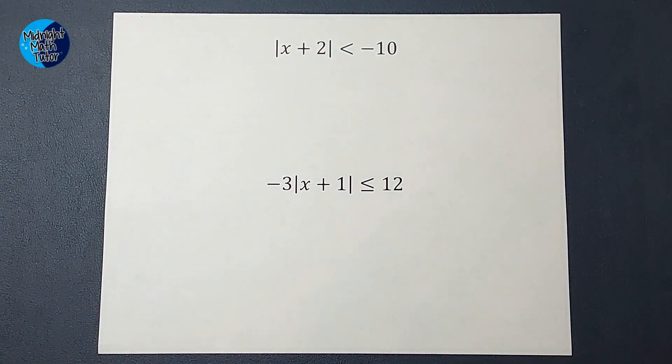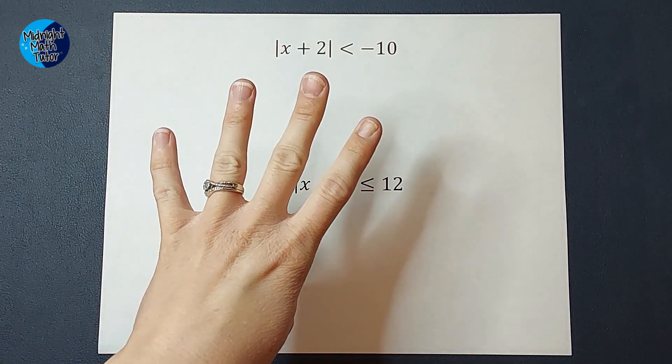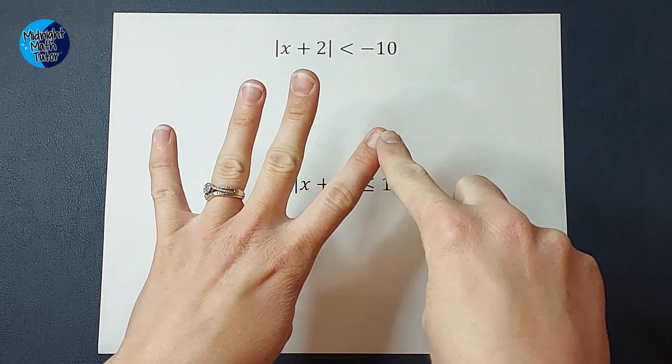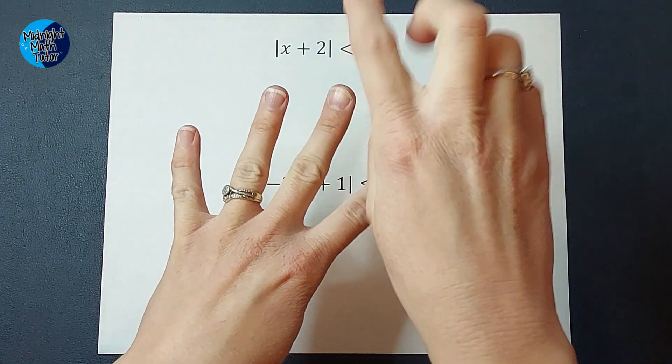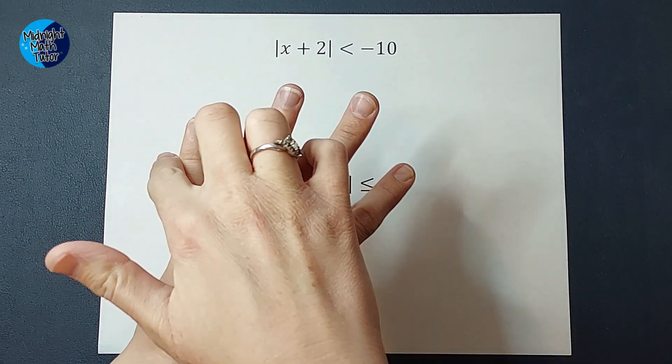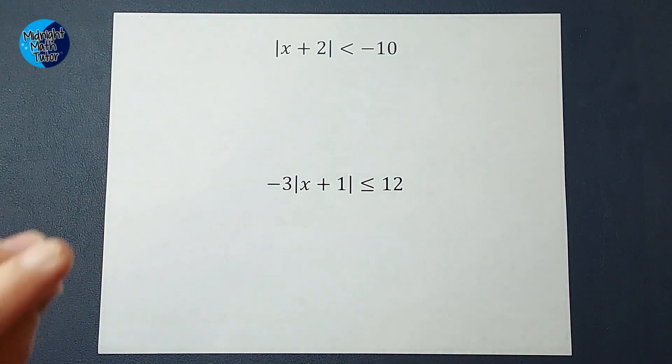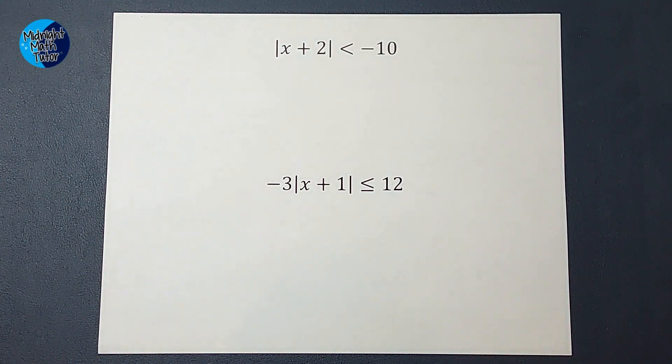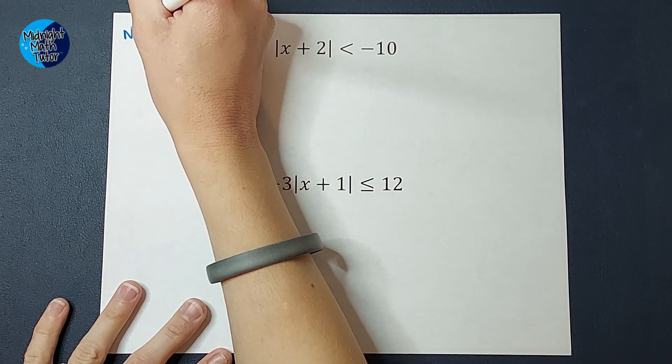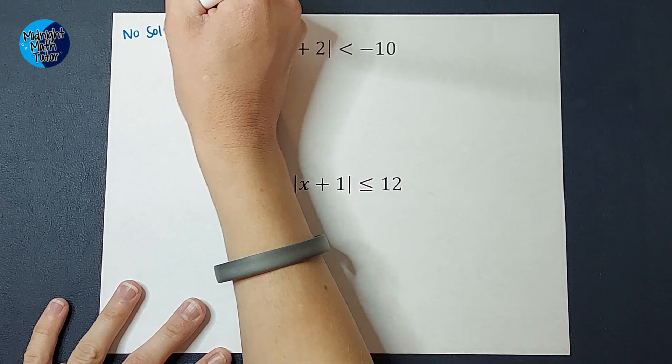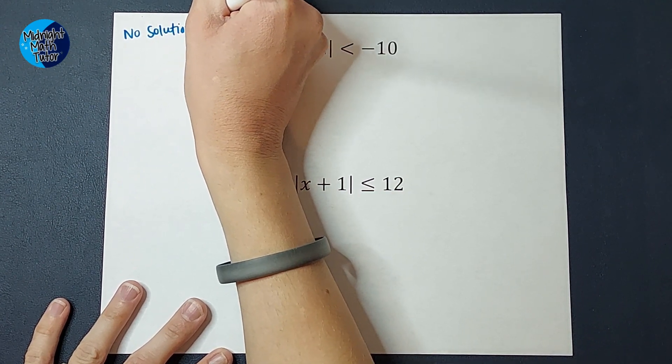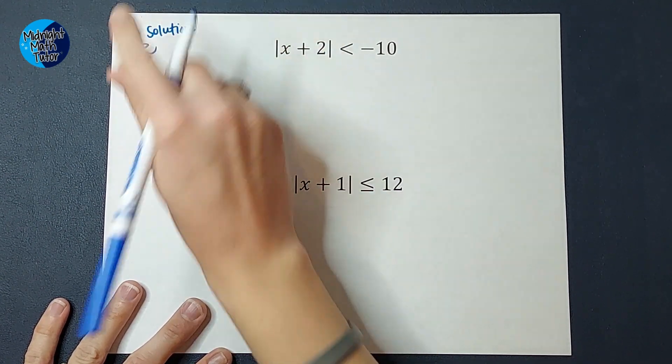So when we are solving absolute value inequalities, there's four possible answers we can get. It's an and inequality, an or inequality, no solution, or all real numbers. On this one, we are going to have one of these that's going to be no solution, and one of them is going to be all real numbers, which you can write like that.